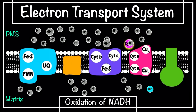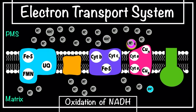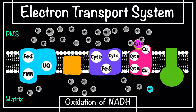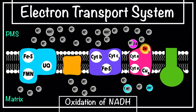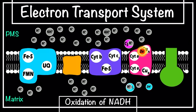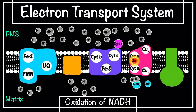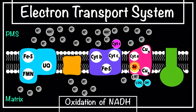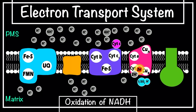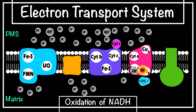The electrons from Complex III are passed to cytochrome c, which is also a mobile electron carrier. Cytochrome c transfers the electrons to Complex IV, also known as cytochrome oxidase. This enzyme complex has two copper centers: the first is called copper A and the second is copper B. This also results in the flow of two protons from the matrix.